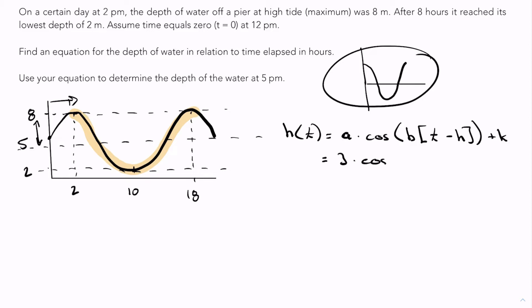So I have 3 times cos, the b value will be 360 divided by the period, which is 16. If you have a chance, just get on your computer and do 360 divided by 16. That gives us 22.5. So I'll have 22.5 for my b value.